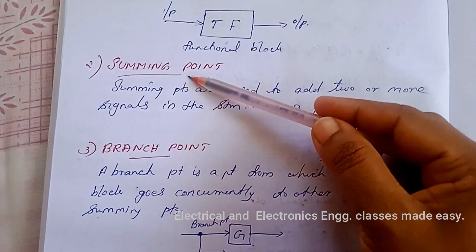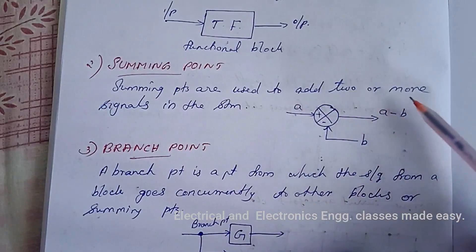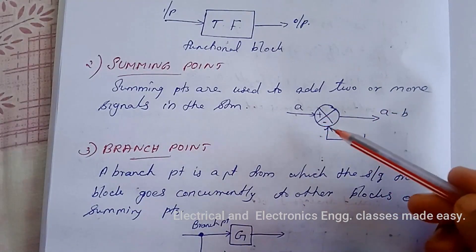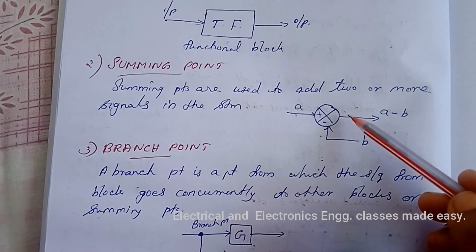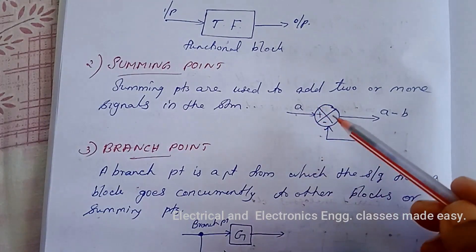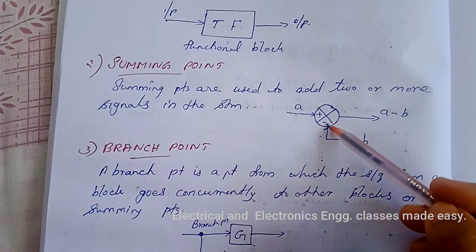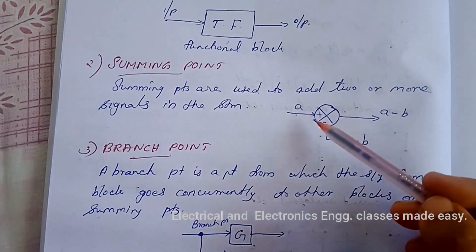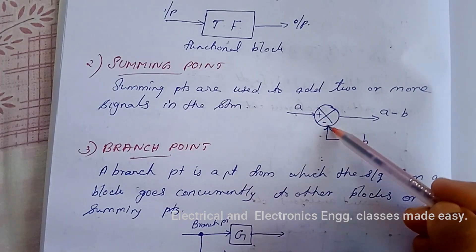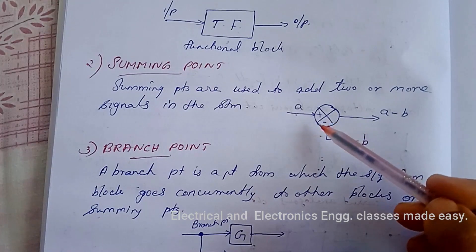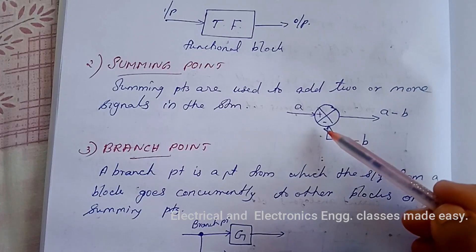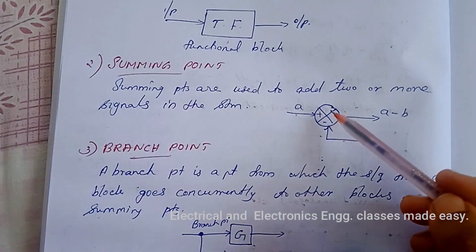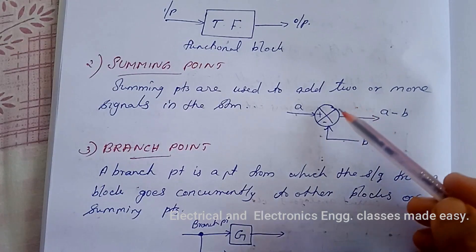Next is the summing point. Summing points are used to add two or more signals in the system. A summing point consists of a circle with a cross, and a plus or minus sign at each arrowhead, to indicate whether the signal is to be added or subtracted. It is important that the quantities being added or subtracted have the same dimensions and same units.